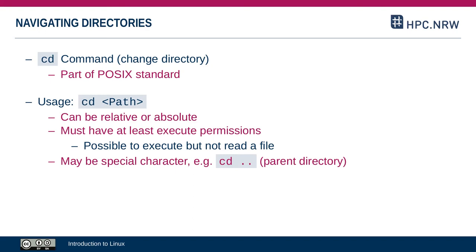It's also possible that you can execute something in a specific location but cannot read it — that's how permissions are set up. You can use the shortcuts shown earlier as part of a path. For example, cd dot-dot would move you one level up in the directory tree.